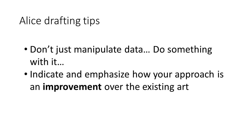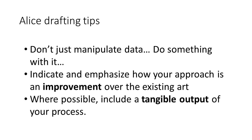Indicate and emphasize how your approach is an improvement over the existing art — stress why your invention is better than what is already out there. Where possible, include some tangible output of your process. If your process controls something, include a thorough description of what it controls, what it does, and what the result is. For example, if you are working on software that controls a 3D printer, go into detail about how the output of that 3D printer — the object it prints — is changed, improved, created quicker, with less errors, or with more resolution because of your data manipulation.